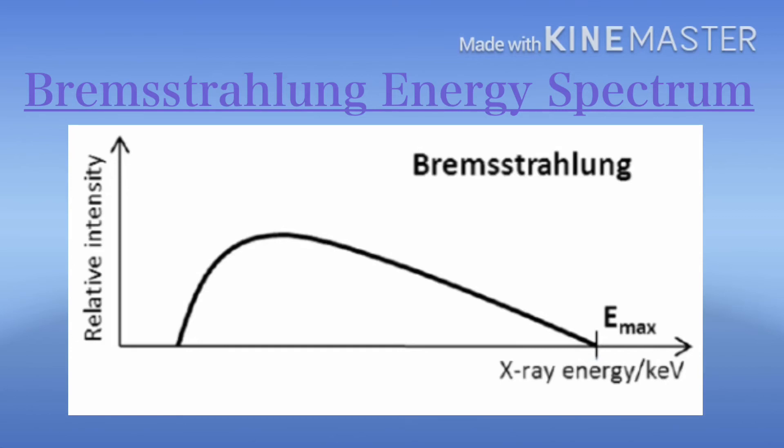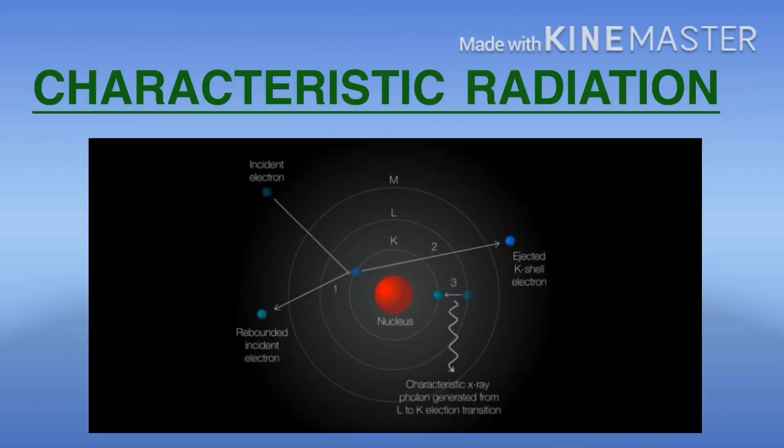The bombarding electrons pass at varying distances around the tungsten nuclei and are thus deflected to varying extents. The distance varies, so this will result in varying amounts of energy in the form of Bremsstrahlung X-ray photons. So these three reasons explain the continuous spectrum. Now let's go to the next topic, characteristic radiation.